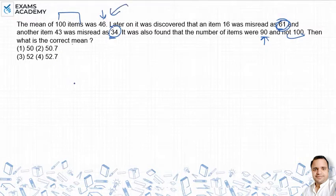How can we approach the question? First, we will find the sum. The number of items is 100, so it is 46 times 100. This is the total sum.